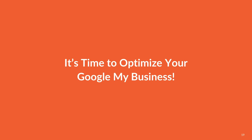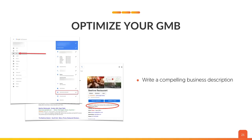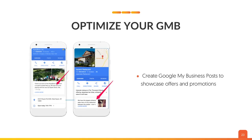So now what's next? It's time to optimize your Google My Business. First, you want to add photos and videos to your listings — if you add photos and videos, people are much more likely to come to your store. You also want to write a compelling business description: what does your business do, and why should people choose you over the competition? And use Google My Business Q&As — question and answers — to understand your audience. Let them ask questions, and answer them as well. It shows that you care.